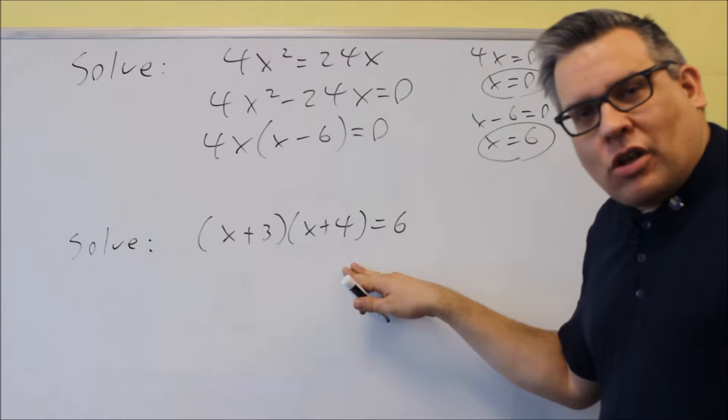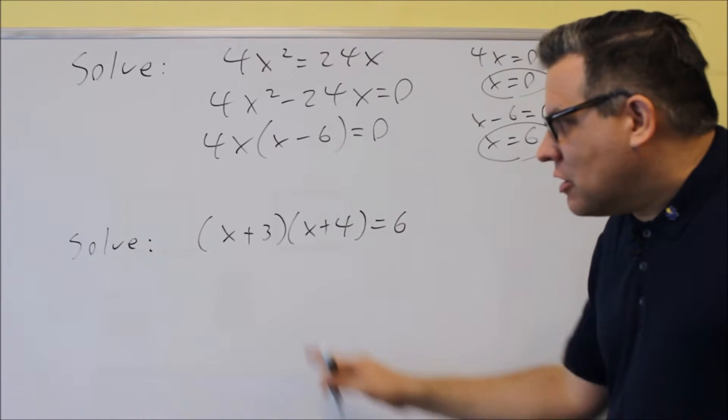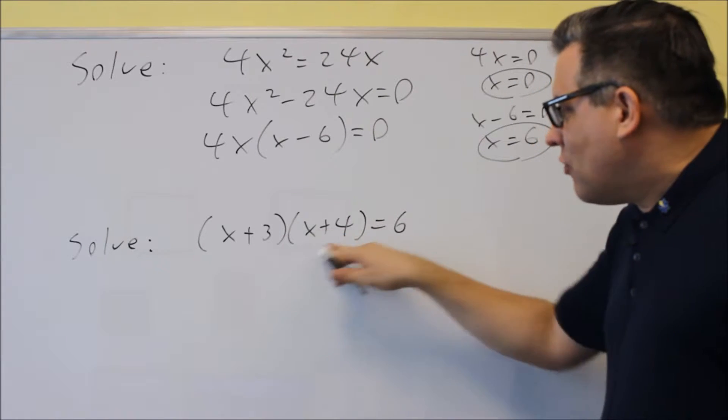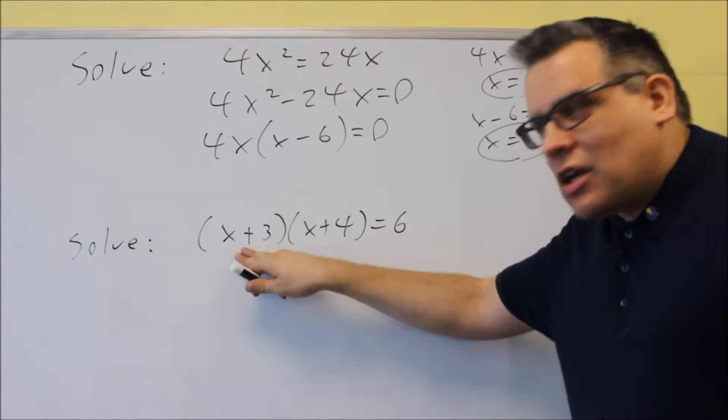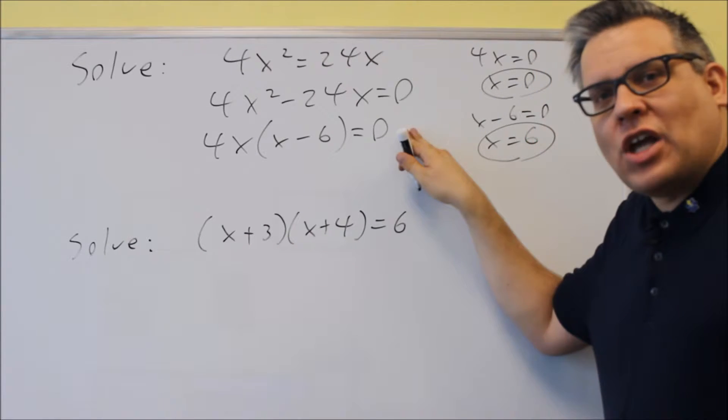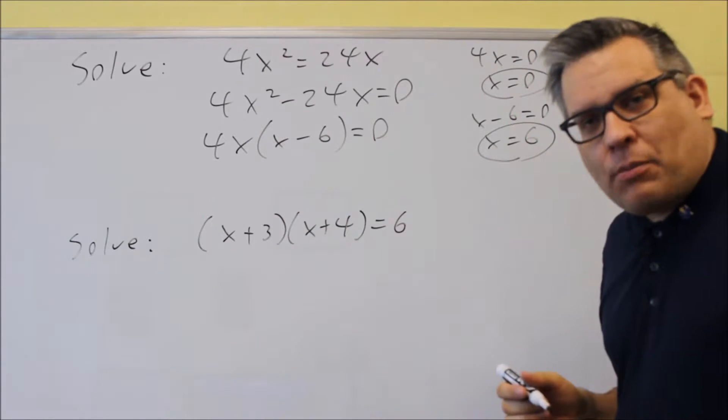Next, we're going to look at this problem, this is another one where a lot of people make mistakes on, and the most common mistake I see is people will take each of these individually and set them equal to six. You can't do that, you can't take each of these equal to six, that only works if you have a zero on that side, because what we're using here is a zero product property.